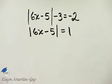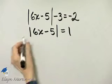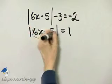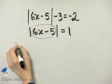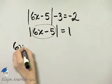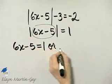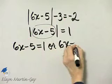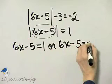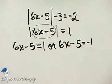Now, for the absolute value of 6x minus 5 to equal 1, that means what is inside here, and that is the expression 6x minus 5, must equal 1, or 6x minus 5 must equal negative 1. And all we need to do is solve these two linear equations.